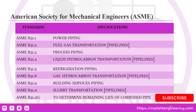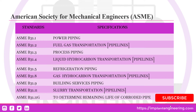ASME B31.8 indicates the pipeline construction and designing for gas hydrocarbon transportation. ASME B31.9 is used for building services. ASME B31.11 is used for slurry transportation.